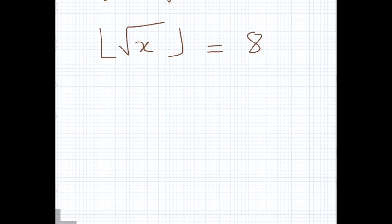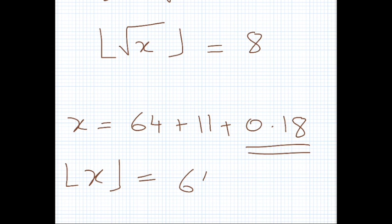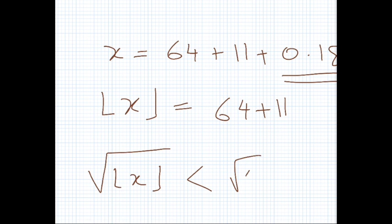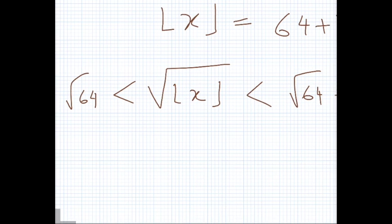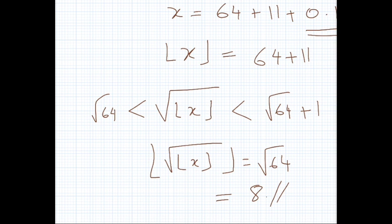On the right-hand side, x = 64 + 11 + 0.18, so the floor of x is 64 + 11 = 75. The square root of 75 is again between 8 and 9, so the floor of the square root of the floor of x equals √64 = 8. Both sides agree.